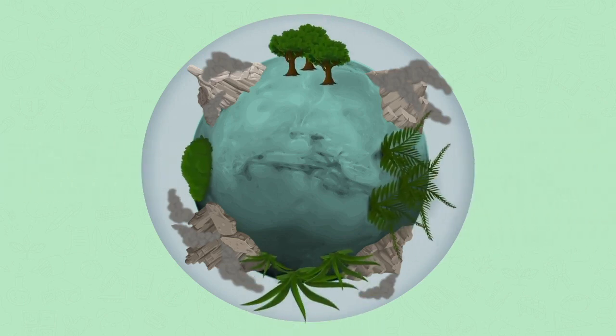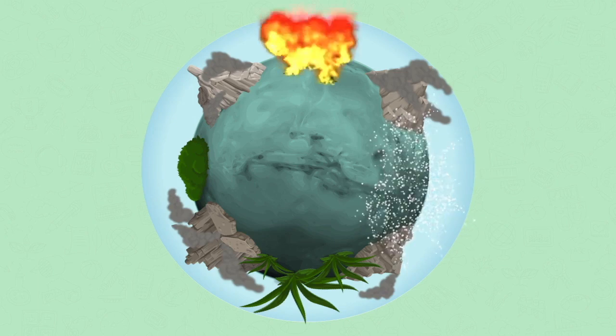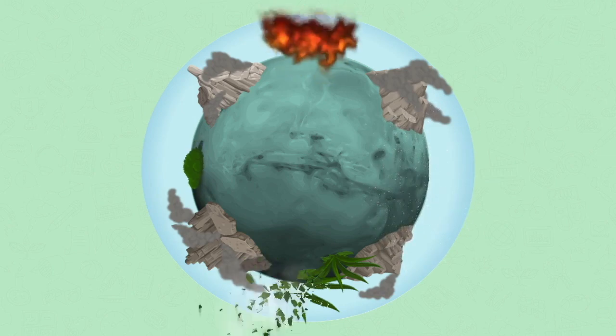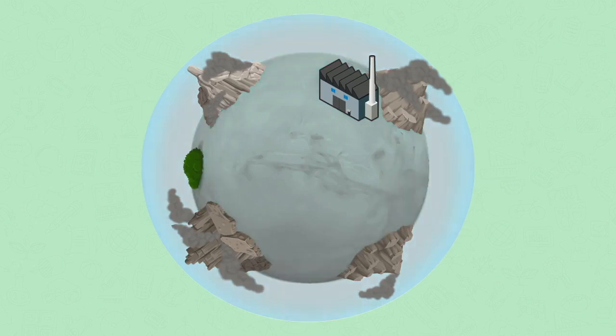These first plants released oxygen into the atmosphere. After this, the atmosphere remained relatively stable for a while, but over the last few hundred years, human beings have removed a lot of the plant life and built cars and factories and other things that release carbon dioxide into the atmosphere.